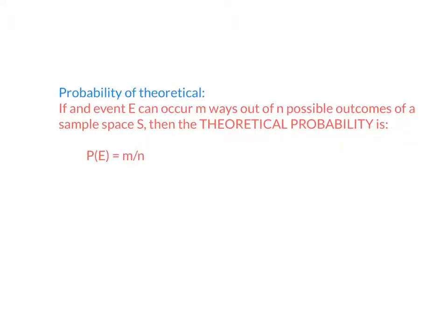The way you do probability theoretical is just put the number of possible outcomes in the bottom of your fraction and the number of ways that an event can occur on the top. Very simple, just m over n.